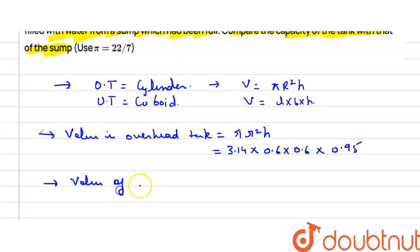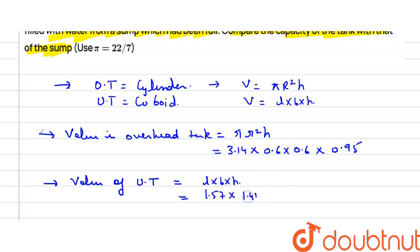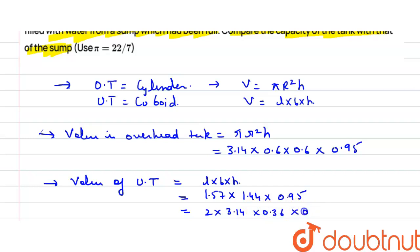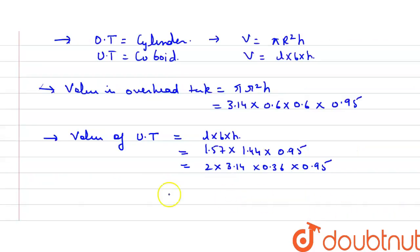Now the volume of the underground tank when it is full of water: volume = length × breadth × height, since it is a cuboid. Length = 1.57 m, breadth = 1.44 m, height = 0.95 m. For simplification, this can be written as 2 × 3.14 × 0.36 × 0.95.